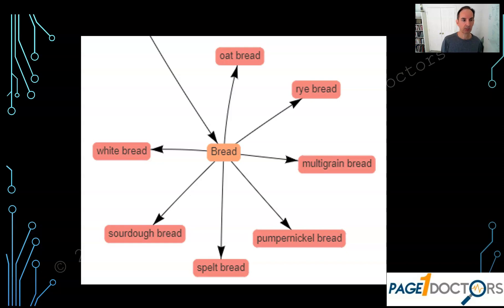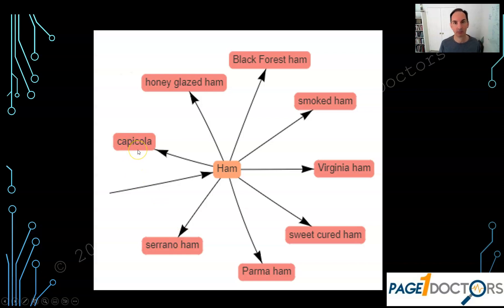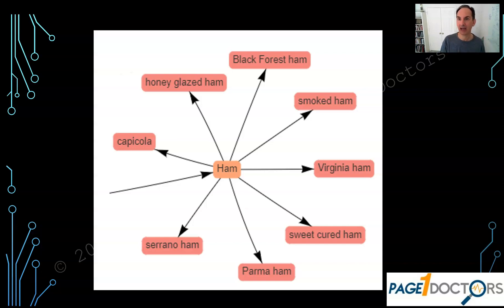But wait, there's more. How about ham? A good old ham sandwich has got to have ham. What kind of ham? You've got Black Forest, smoked ham, Virginia, sweet cured, Serrano ham, capicola, and honey glazed. Again, you can have dozens or hundreds of different types of ham. So when you are describing your ham sandwich, make sure you list the ingredients. If you have a shop where you offer multiple types of ham sandwiches, maybe you can list the types of ham available to build that entity, which is your ham sandwich.